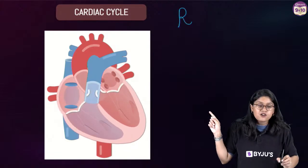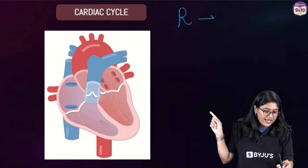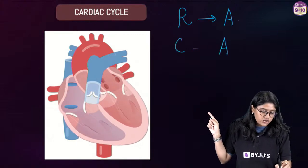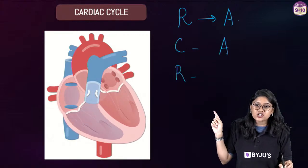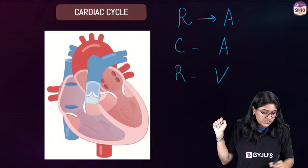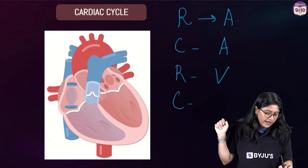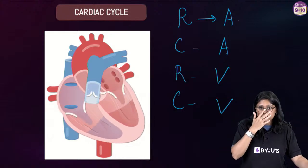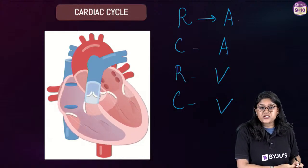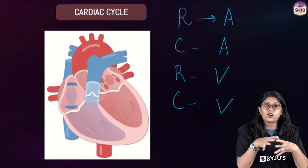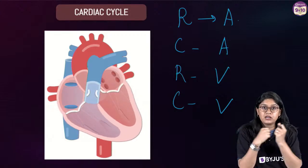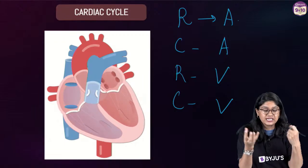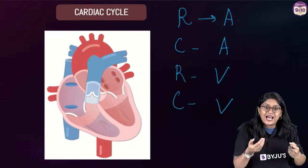First we have relaxation of the atriums, then we have the contraction of the atriums, then we have the relaxation of the ventricles at about the same time, and then the contraction of the ventricles. This is happening because the heart is a pumping organ — it has an electrical impulse and because of that it beats.